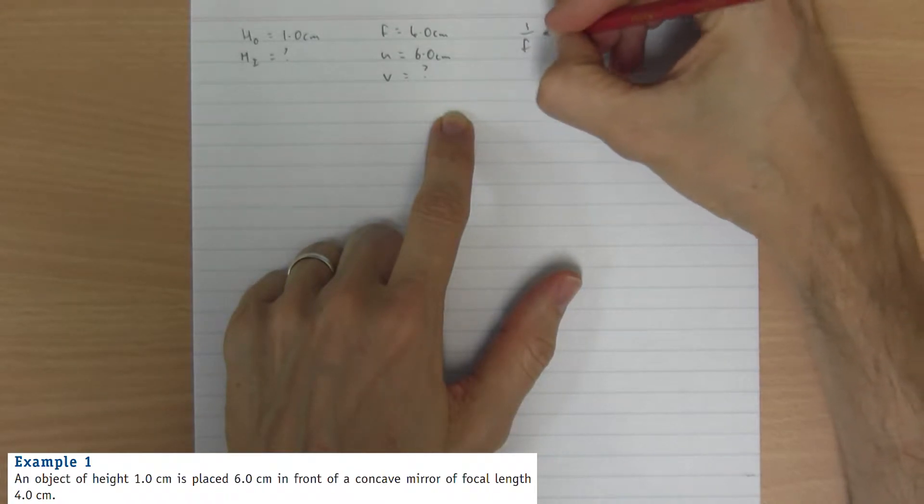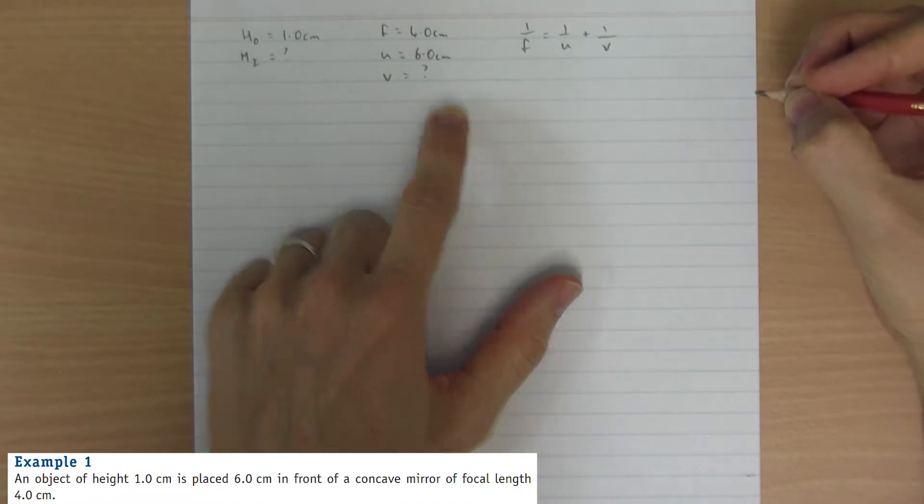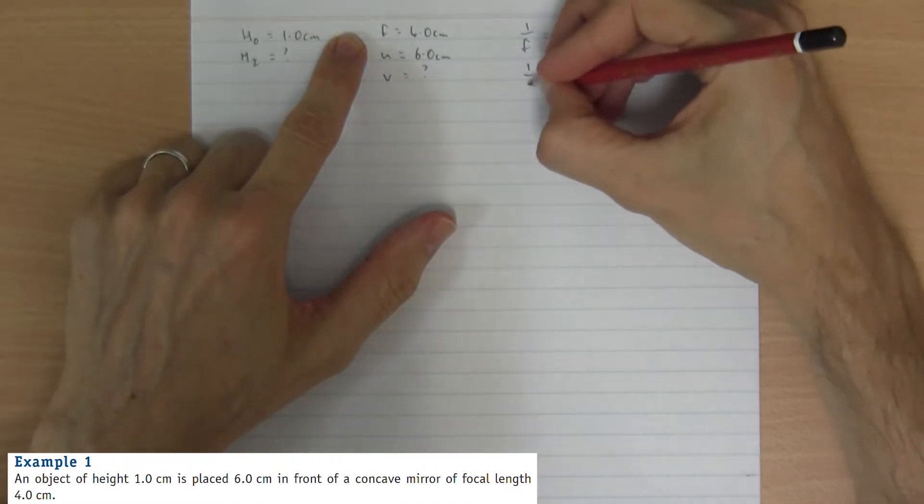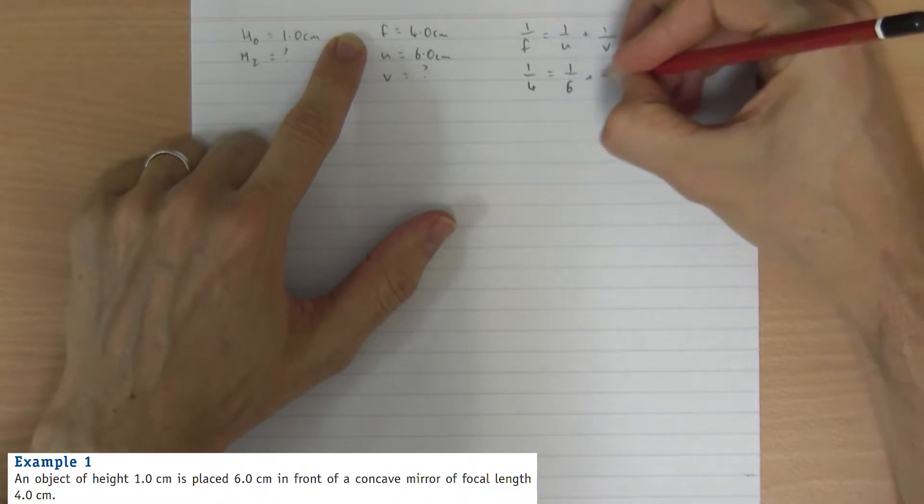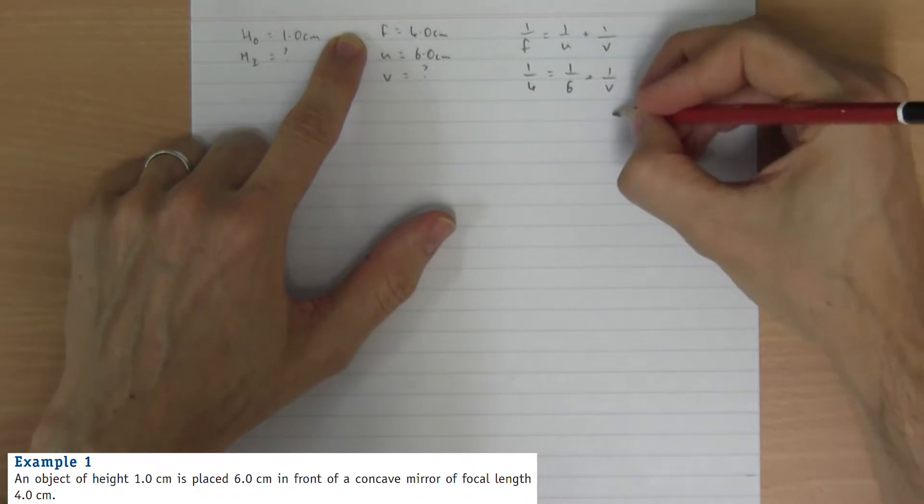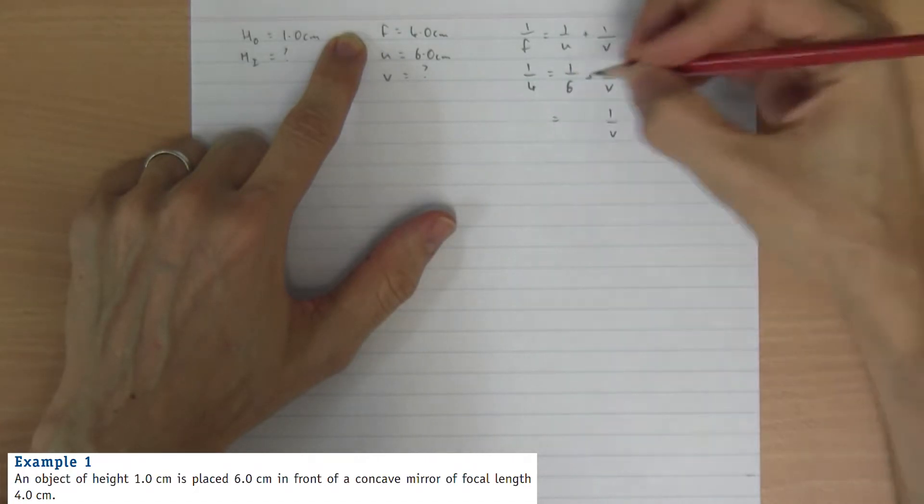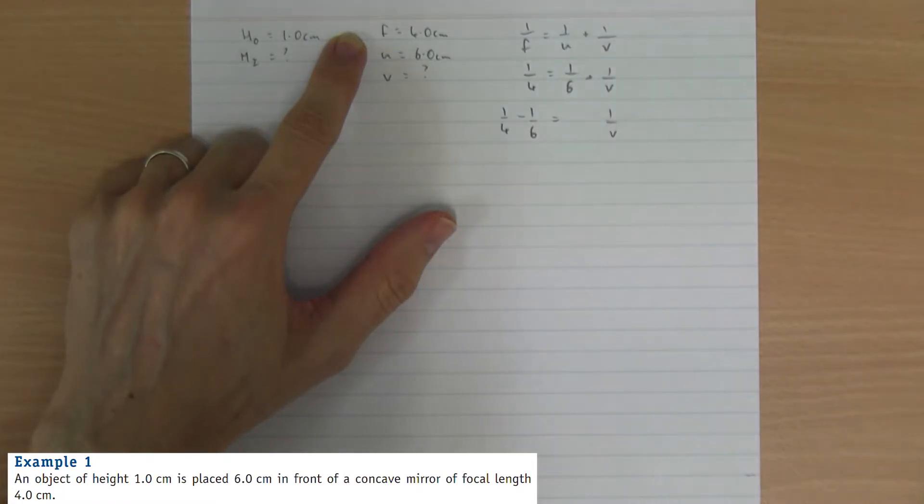One over F is one over U plus one over V. Put in what we know. One over four is one over six plus one over V. One over V must therefore be a quarter minus a sixth.